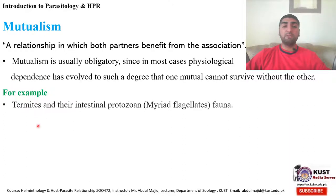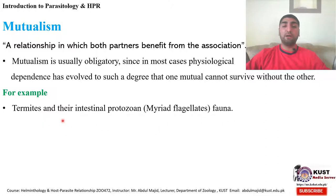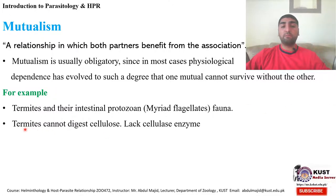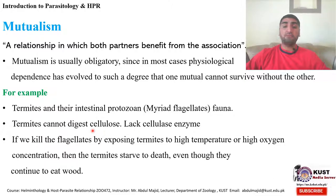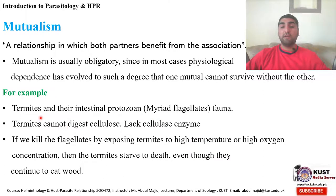A very classical and beautiful example is that of the termites and the hypermastigote flagellates. Termites feed on wood, which is actually cellulose. But these termites don't have the enzyme cellulase in their intestine, and that's why they cannot digest the food they eat without the help of these protozoans, the hypermastigote flagellates. If the flagellates are present in the intestine of the termite, it will eat wood and survive.